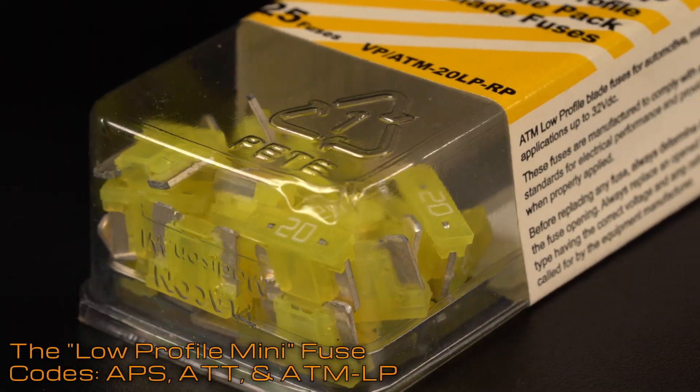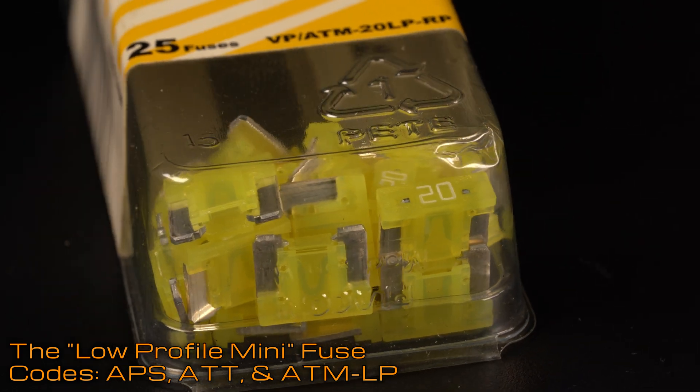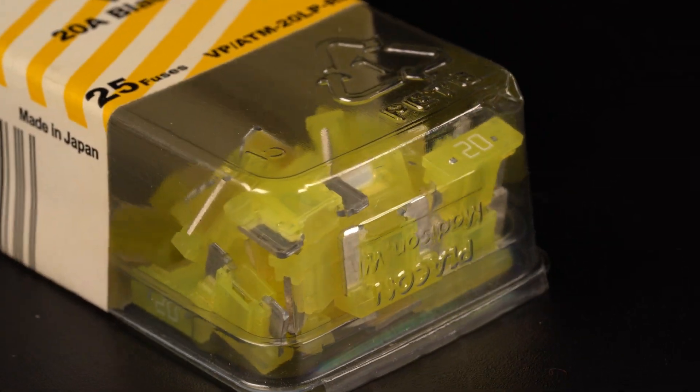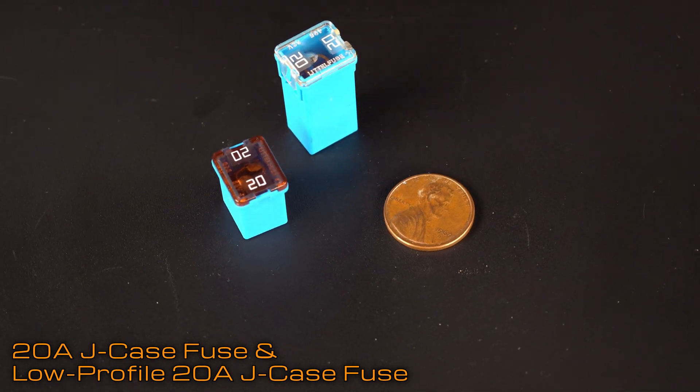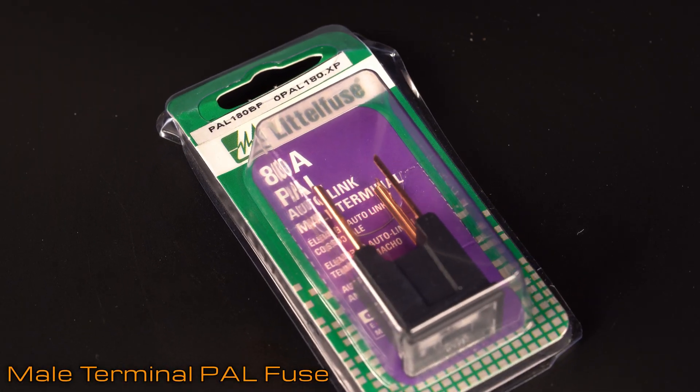The low-profile mini had the same distance between the blades as the mini, but placed the fuse between the contact points instead of above them. Fuses that needed to deal with higher amperage and temperatures would switch from bolt-down bars to cartridge designs.